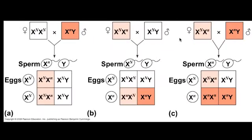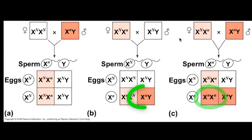Because this gene is only found on the X chromosome, it is considered sex-linked and more particularly X-linked. You can see that females can be colorblind, but the probability is lower than that for males.